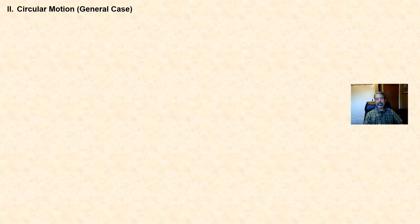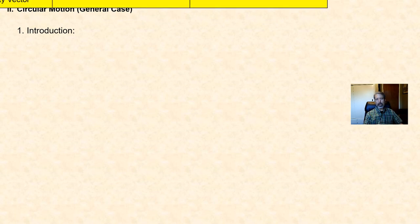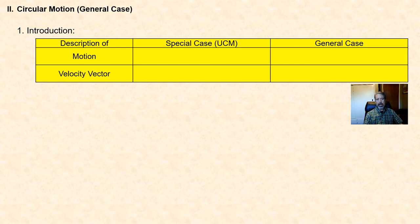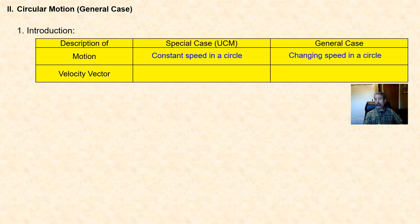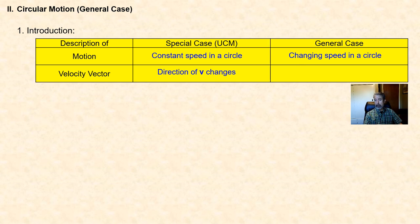In the remainder of this presentation we'll look at the general case of circular motion. We've discussed uniform circular motion where the object moves at a constant speed. Now we'll look at the more general case where the object still moves in a circle but the speed is no longer constant — it can change in time. In this general case, both the magnitude and the direction of the velocity change as the object moves in a circular path.